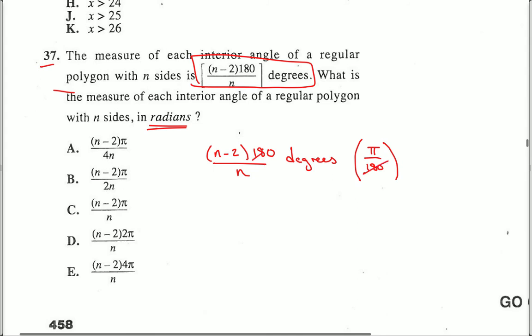So in this case, 180 divided by 180 cancels out, and what I'm left with is pi times (n minus 2) over n radians.